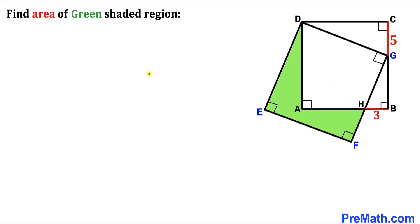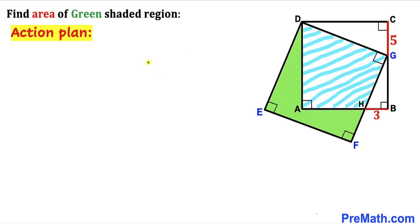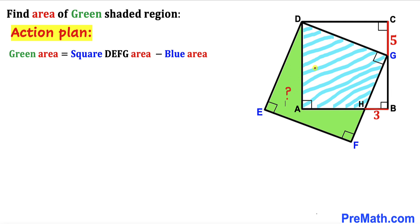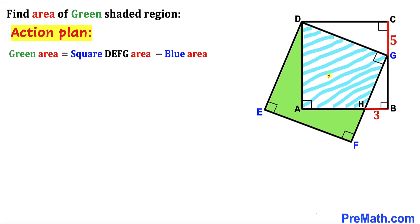Let's get started. Here's our action plan: since we are interested in calculating the area of this green shaded region, the green shaded area is going to be equal to the area of the bigger square DEFG minus the area of the blue shaded region.